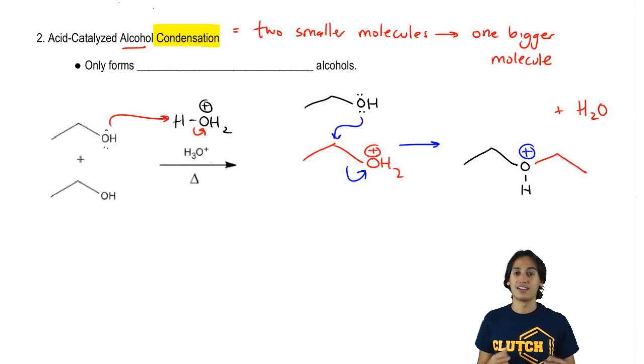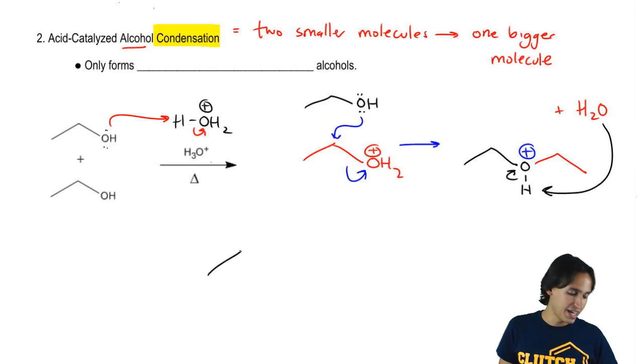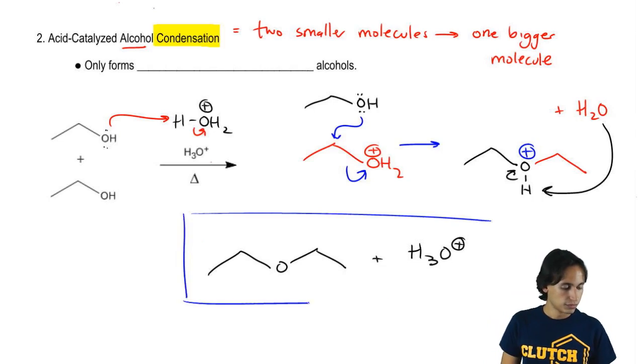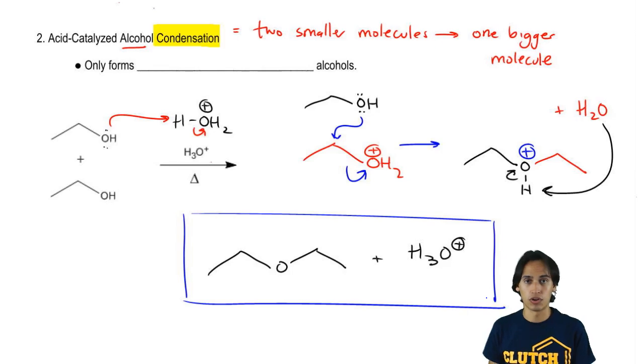So what that means is that I use the water to pick up the proton. And what I'm going to wind up getting at the end is I'm going to get an ether plus the same H3O plus that I started off with. And there you have it. We just condensed an ether out of alcohol.